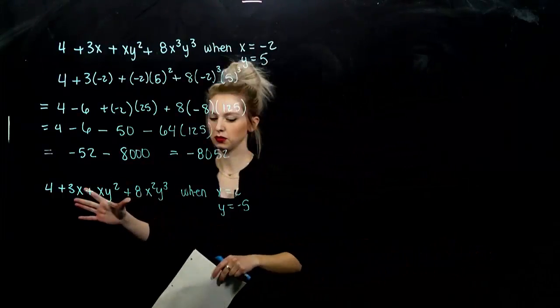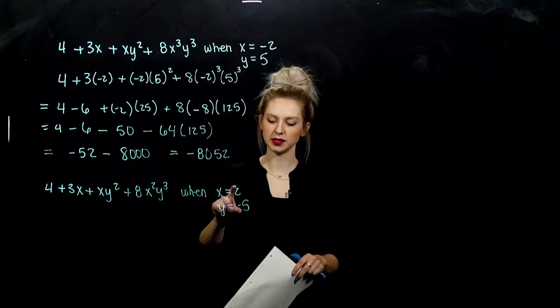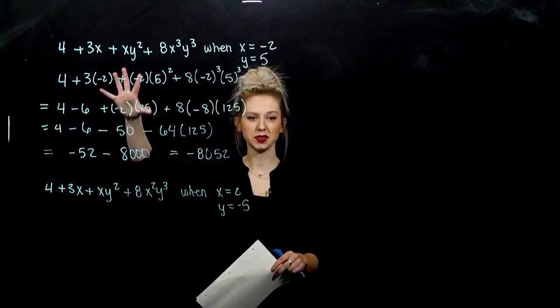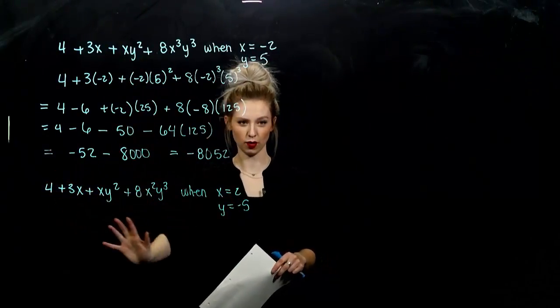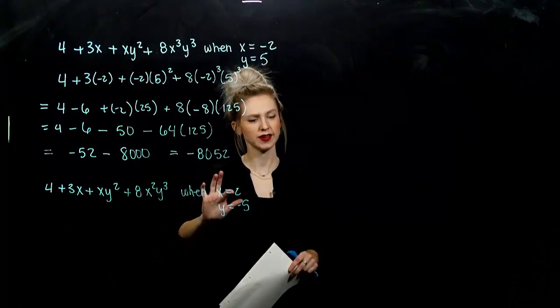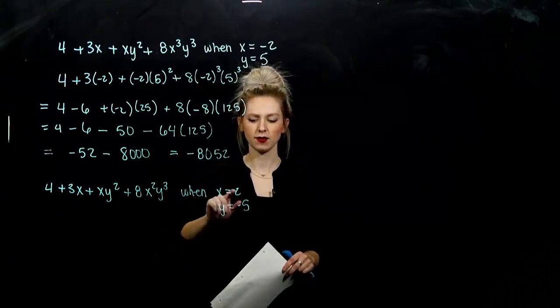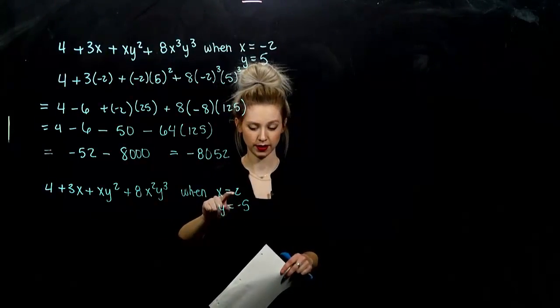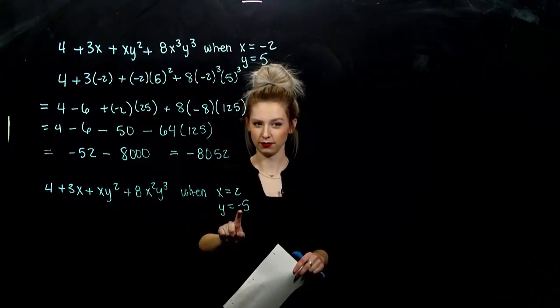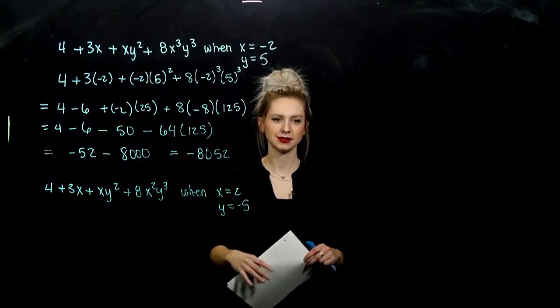Same polynomial, same constants, but different signs. So you're going to be working with the same numbers. So don't let those overwhelm you. You'll just have to watch the signs. Be careful because now 2 is positive and 5 is negative on y. So plug those in and see how it changes.